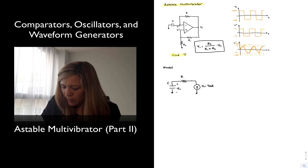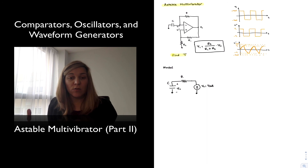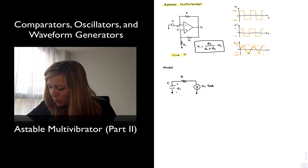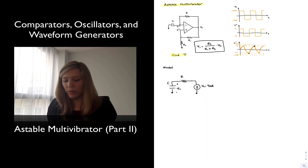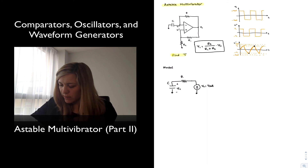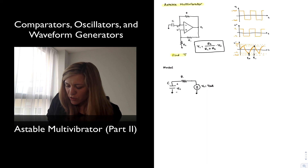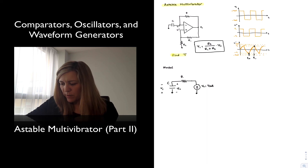We're only going to calculate how long it takes for the capacitor to charge from -V1 to +V1, and that gives us half the period. Multiplying that by 2 gives the full period. We're going to assume symmetrical charging and discharging periods for the capacitor. So the capacitor starts with an initial value of -V1 at time T0, and we want to find time T1.